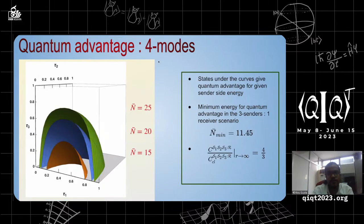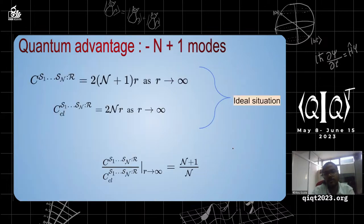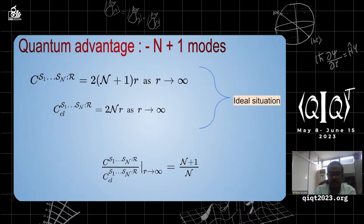For four-mode states, a minimum energy of at least 11 units is required to surpass the classical capacity, and in the limit of infinite squeezing the ratio becomes 4/3. Scaling this protocol to n senders, in the limit of infinite squeezing the quantum-to-classical capacity ratio is (n+1)/n. Thus, in the high-squeezing limit, our proposed distributed dense coding protocol can surpass the classical capacity limit.